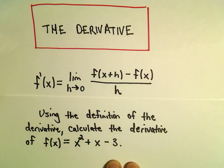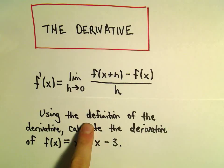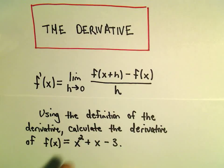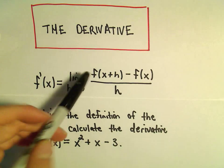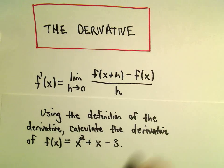In this video we're going to do another example of calculating the derivative. Here we're going to use the definition of the derivative to actually find the formula. The derivative formula for the function f of x equals x squared plus x minus 3. So all I'm going to do is just fill in this definition.